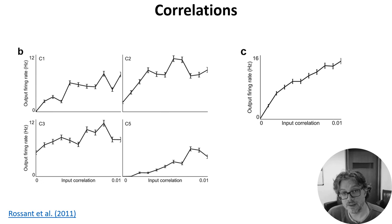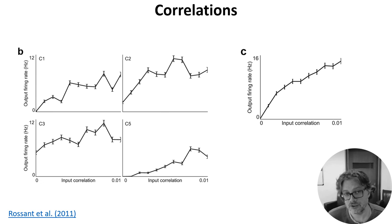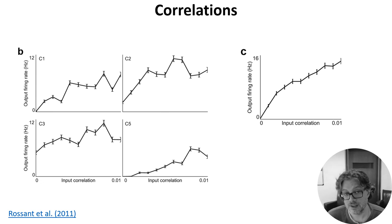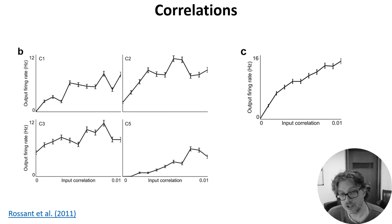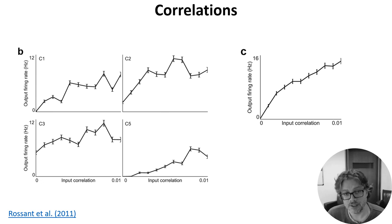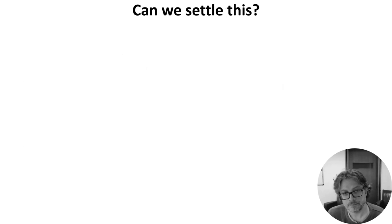We can go further than this. You can argue that regardless of whether the code is timing or rate based, you'd expect to see low correlations and individual spike train statistics consistent with them being generated by a Poisson process that has no meaningful timing information. These statistics are what you'd get in any scenario when each individual spike carries the maximum amount of information. This has been developed into an interesting and detailed theory by Sophie Deneuve, and I've put a link to a good starting point in the reading list.